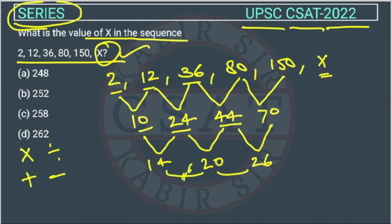So we got the pattern. So next term will also be 6 ka difference. So next term will be 32. If this is 32, so this term will be, we will add this, so this will be 70 plus 32, so this will be 102. Because 102 minus 70, then we will get 32.